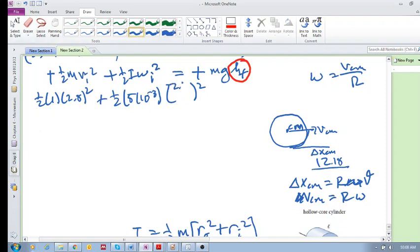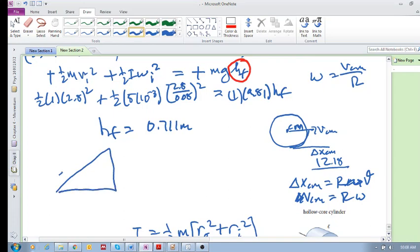This is equal to one kilogram times 9.81 times h final. So h final then, if you solve for this, you should get roughly 0.711 meters. We know that if that is your delta x and that is your height and that is 30 degrees, then we know that delta x, which is what we're looking for, is equal to h over sine theta, which is 0.711 over sine 30 equals 1.42 meters.